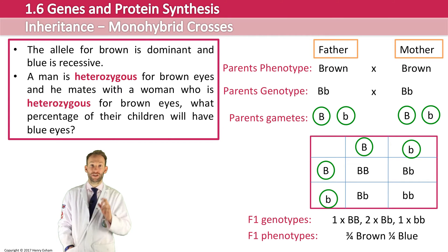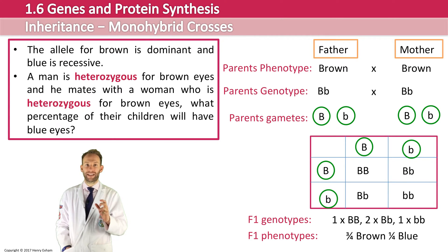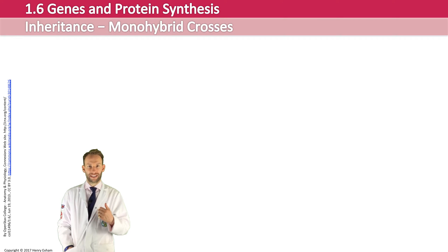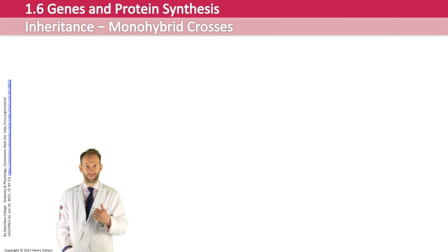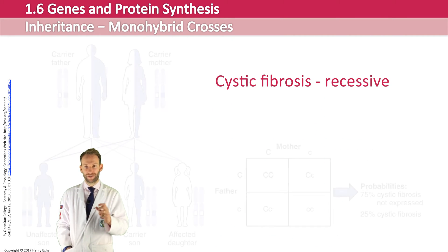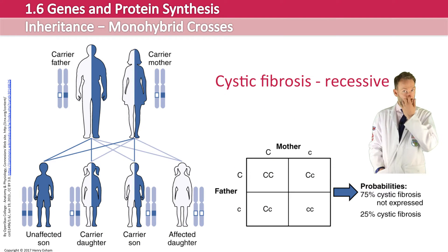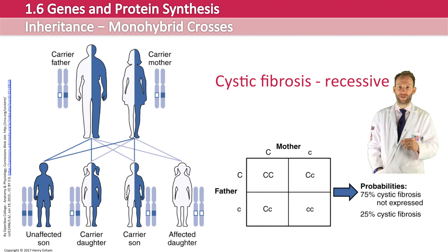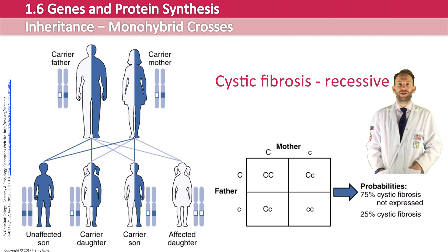Good examples that may come up in questions are genetic diseases like cystic fibrosis and Huntington's disease. Cystic fibrosis is a recessive condition — you could be a carrier if heterozygous, but you need to be homozygous recessive to actually have the disease. Huntington's disease is caused by a dominant allele, so it is inherited slightly differently.